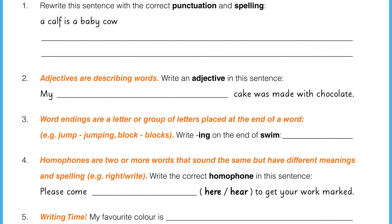Question 1. Rewrite this sentence with the correct punctuation and spelling: 'A calf is a baby cow.' Here's a hint — the first letter of a sentence must be a capital letter. You then have to decide what other punctuation is needed.